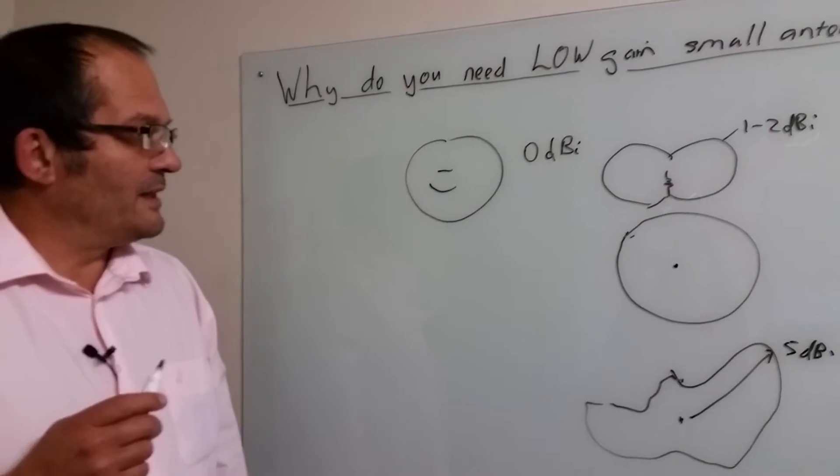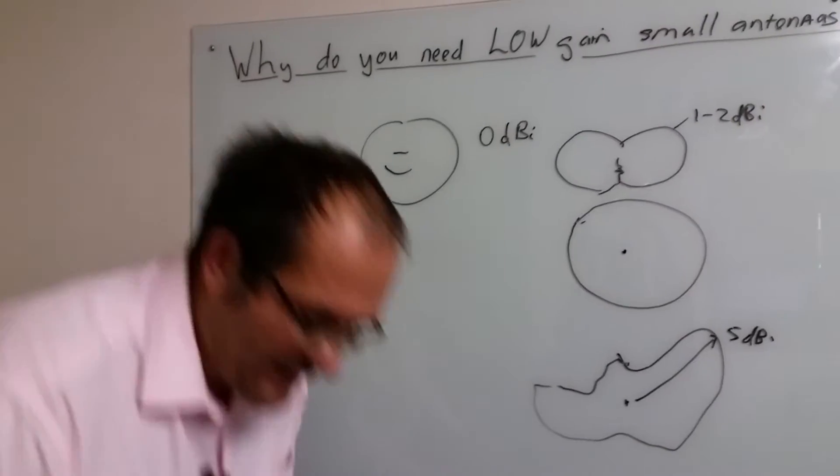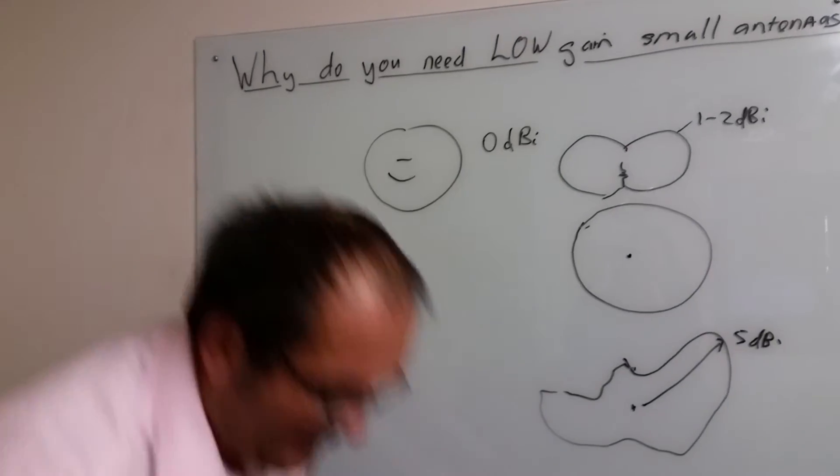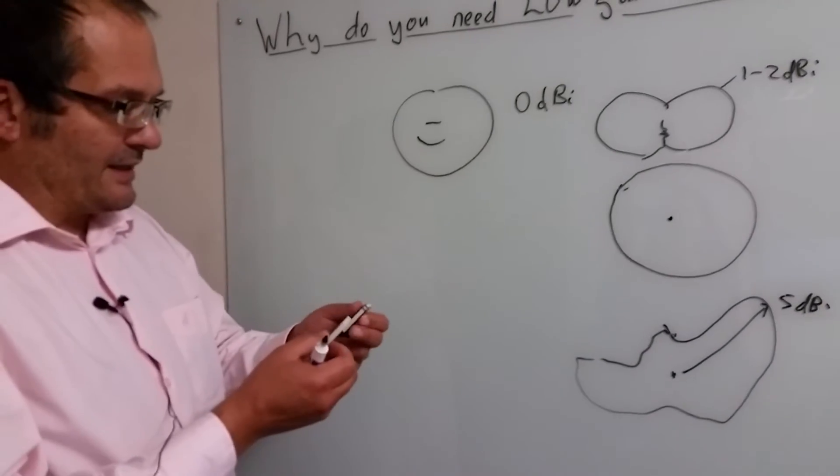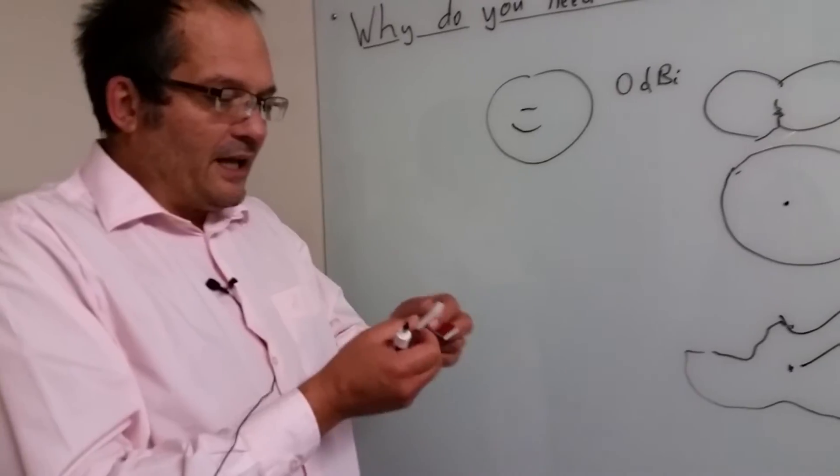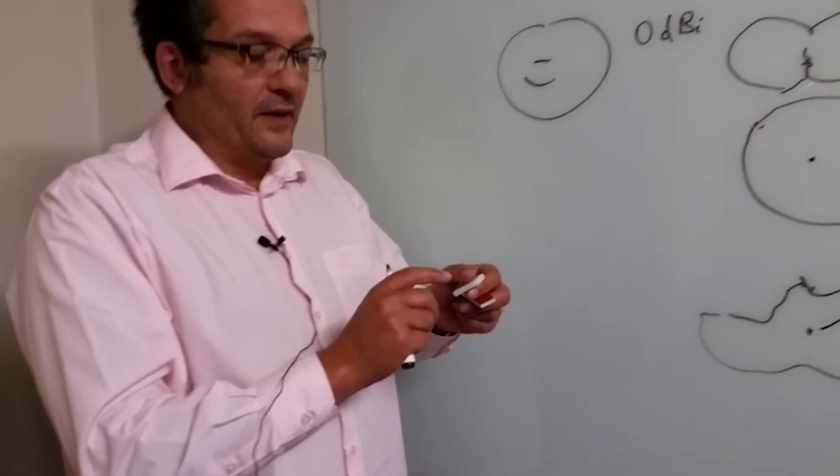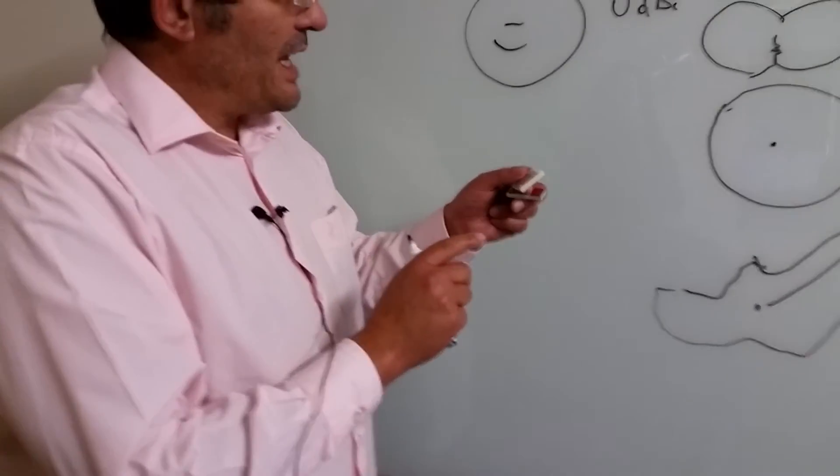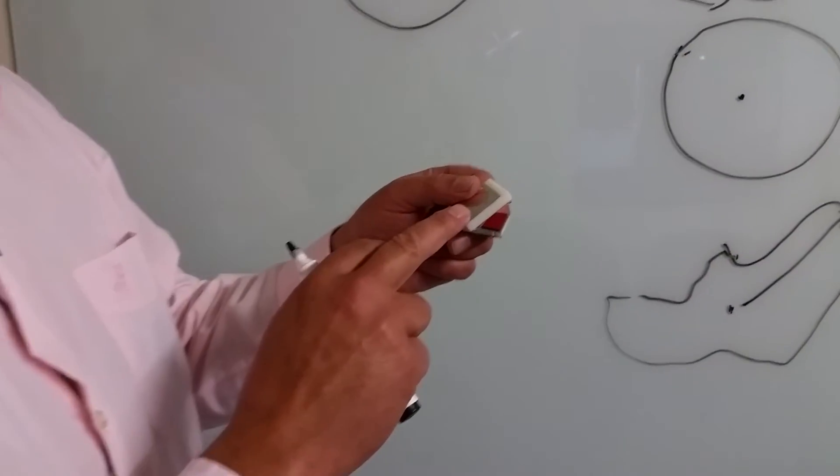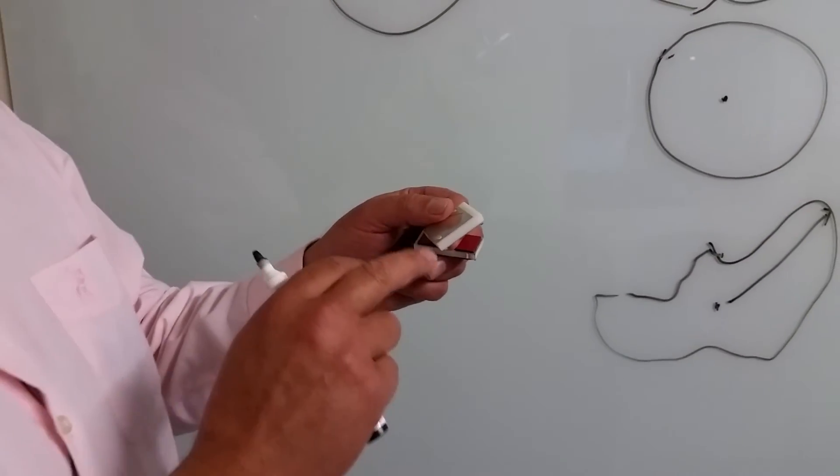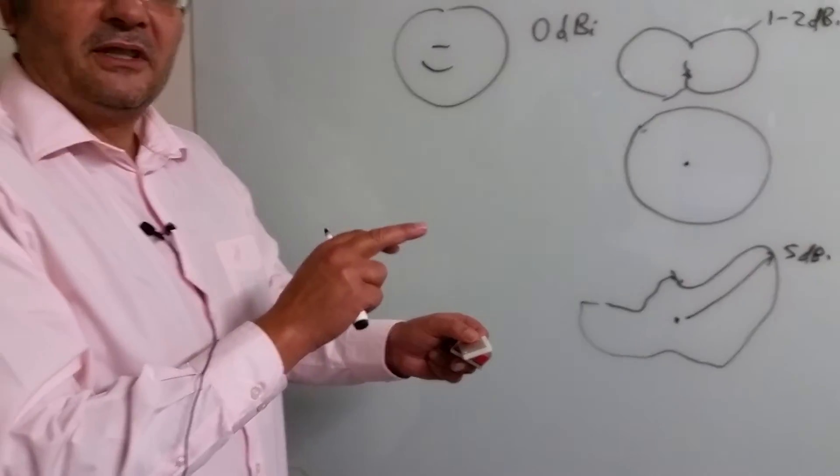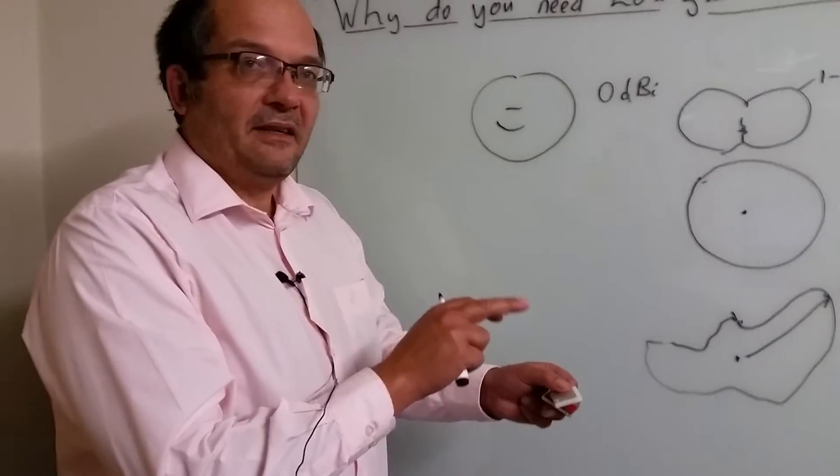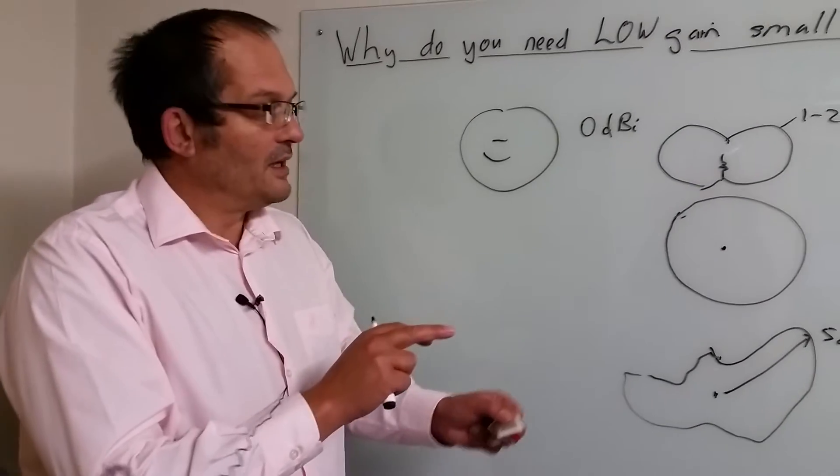The only exception I would put to that is if you've got really small antennas which are embedded in devices like the stuff that sits in your cell phone. There you could find, and you do find, gain goes low because the actual efficiency of the antenna cannot be achieved when it's this size.